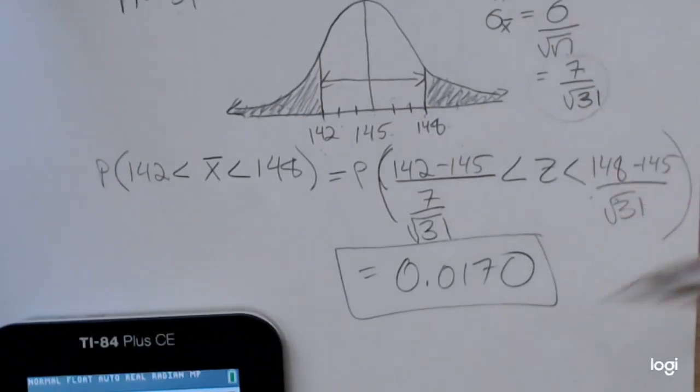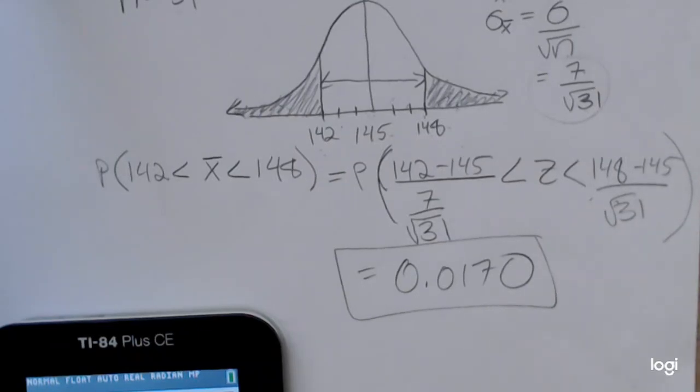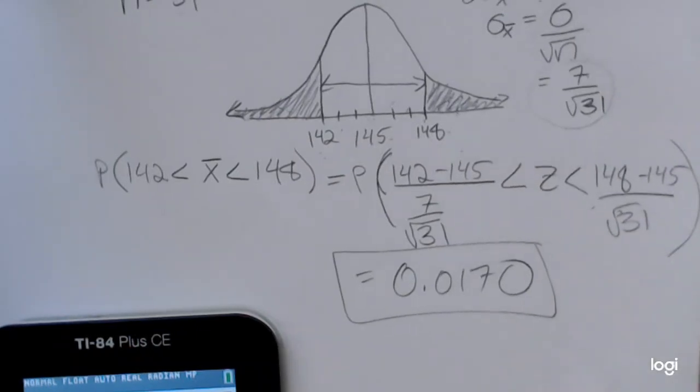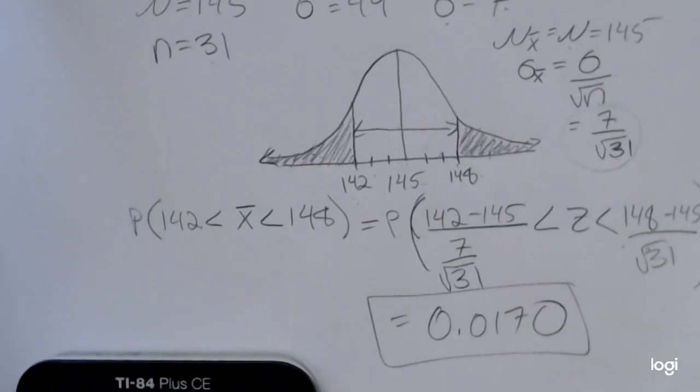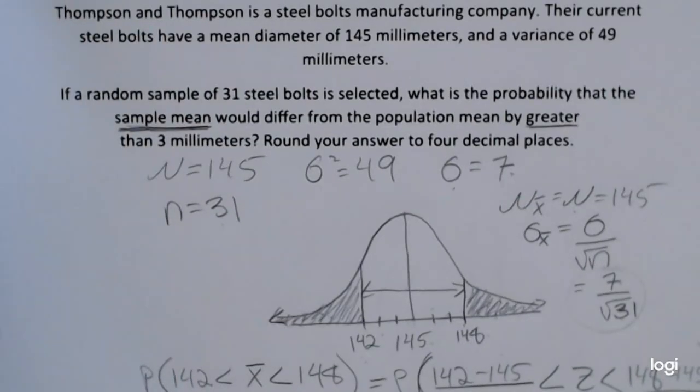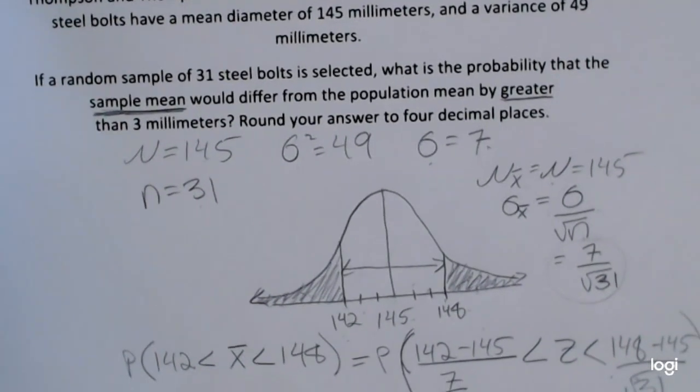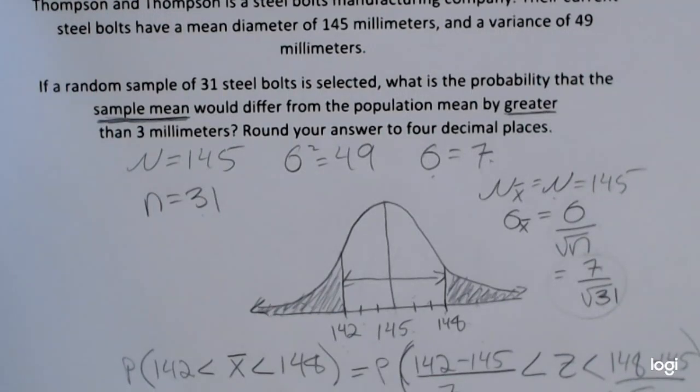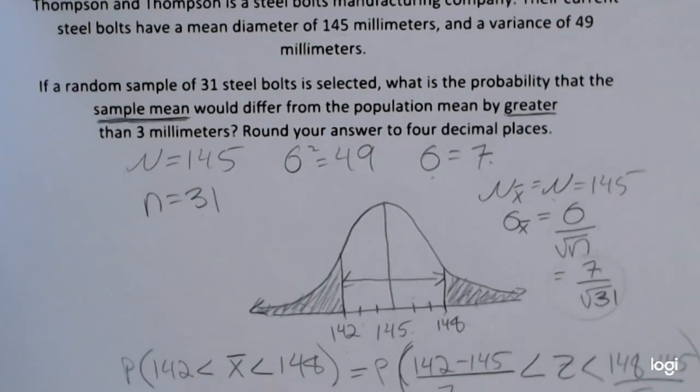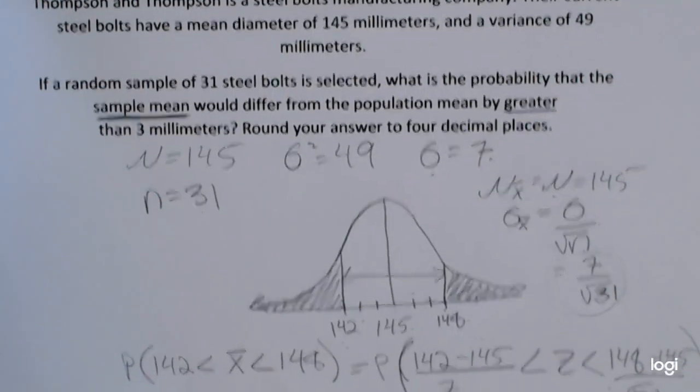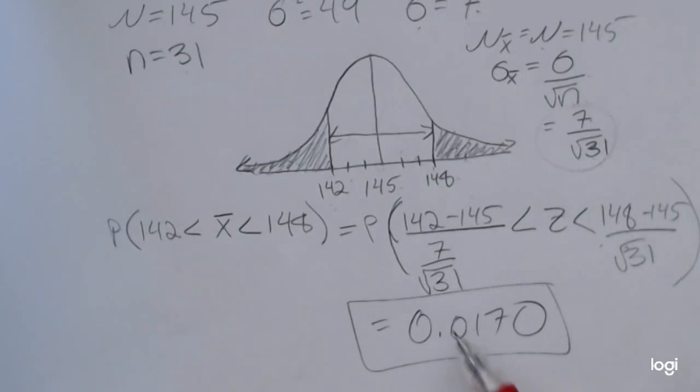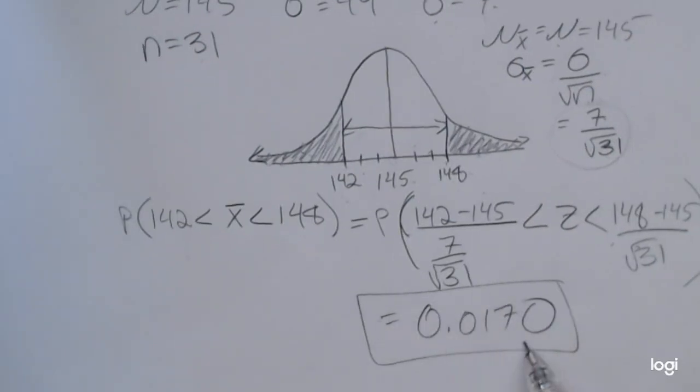So as a manufacturer, you might be concerned with whatever you're making, in this case steel bolts, to be either too large or too small, then you want to know that probability. What is the probability that that's going to happen? So if they took, repeatedly took batches of the same sample size, they could accurately assess that probability.